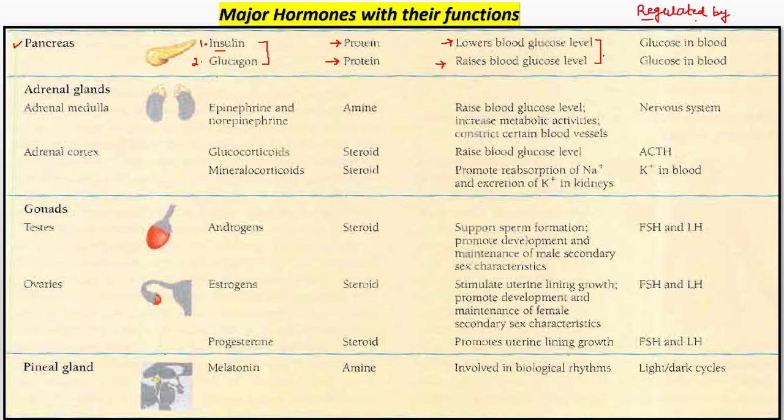Jab kabhi bhi sharir mein glucose ki maantra kam hai, tab glucagon release hoga and jo stored glucose hai, uski madad se glucose ka level raise aur up karayega. Glucose ki kitni maantra hai blood mein, wohi nirdharit karayi ki kab aur kaisa glucagon release hoga. Toh dono hormones mil kar glucose ka ek homeostatic level jo hai body mein banaye rakhte hain. Normal blood glucose level — fasting ke doran test hota hai — for non-diabetic persons, it's between 3.9 to 7.1. So that is you need to remember.